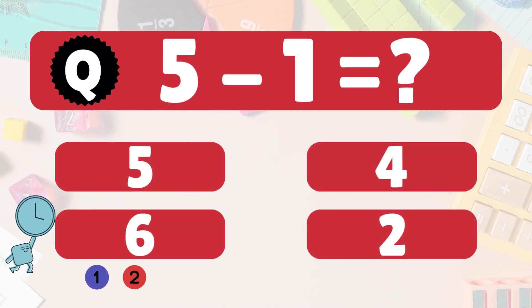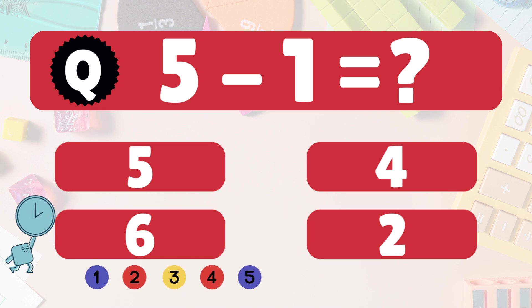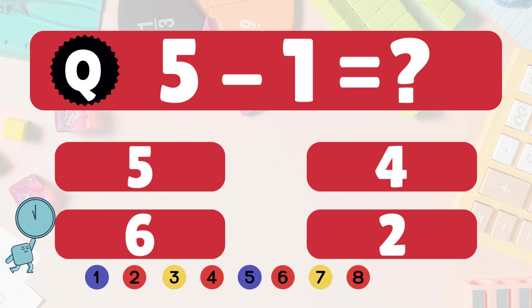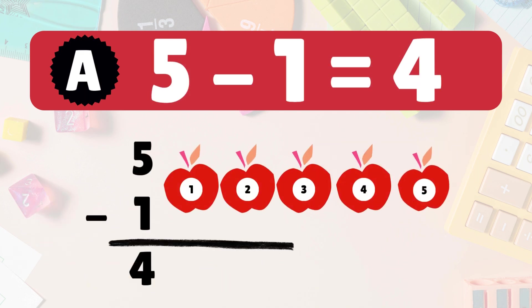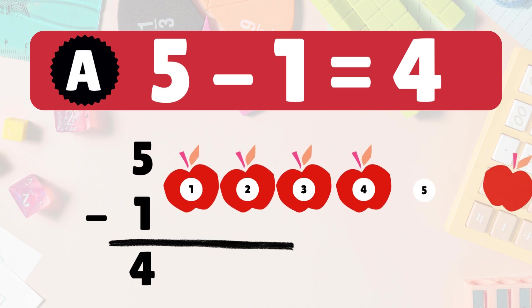Next: 5 minus 1 equals what? 5 minus 1 is 4. Here we have 5 apples. Take 1 away. 4 apples left: 1, 2, 3, 4. So 5 minus 1 is 4. High five!